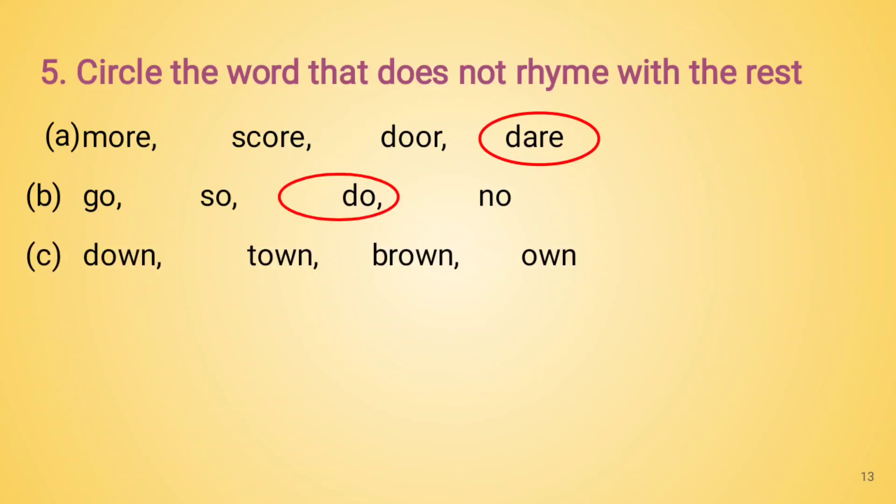Next set: down, town, brown, own. Here the word own has a different sound, whereas the words down, town, and brown are the rhyming words. So we circle the word own.